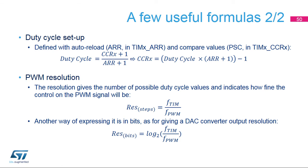The duty cycle is defined using the auto-reload value in TIM_XARR and the compare value in TIM_XCCR_X. The duty cycle equals (compare value + 1) / (auto-reload value + 1). The PWM resolution — the number of possible duty cycle values — equals (timer clock frequency / PWM frequency) − 1. Expressed in bits, the resolution is log2 of (timer clock frequency / PWM frequency) − 1.